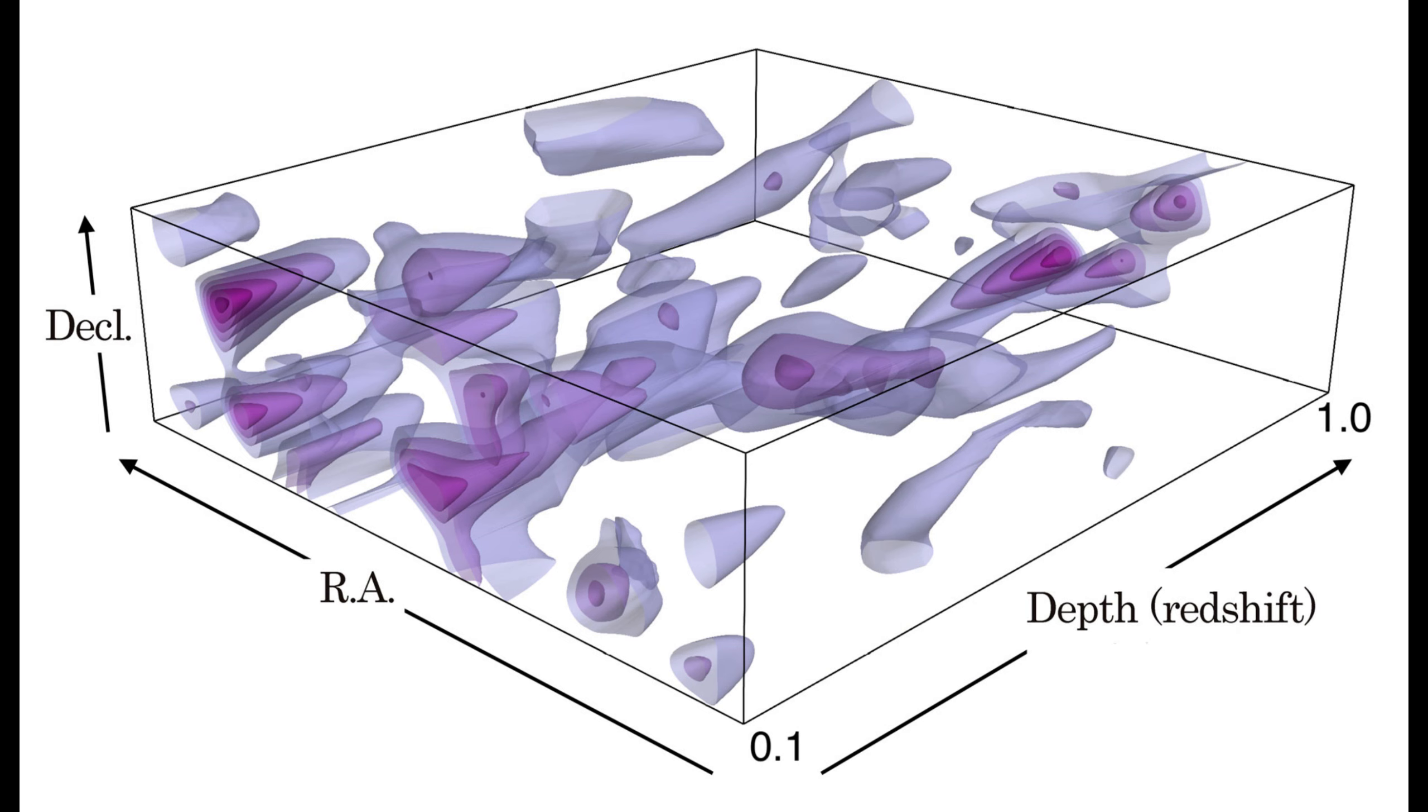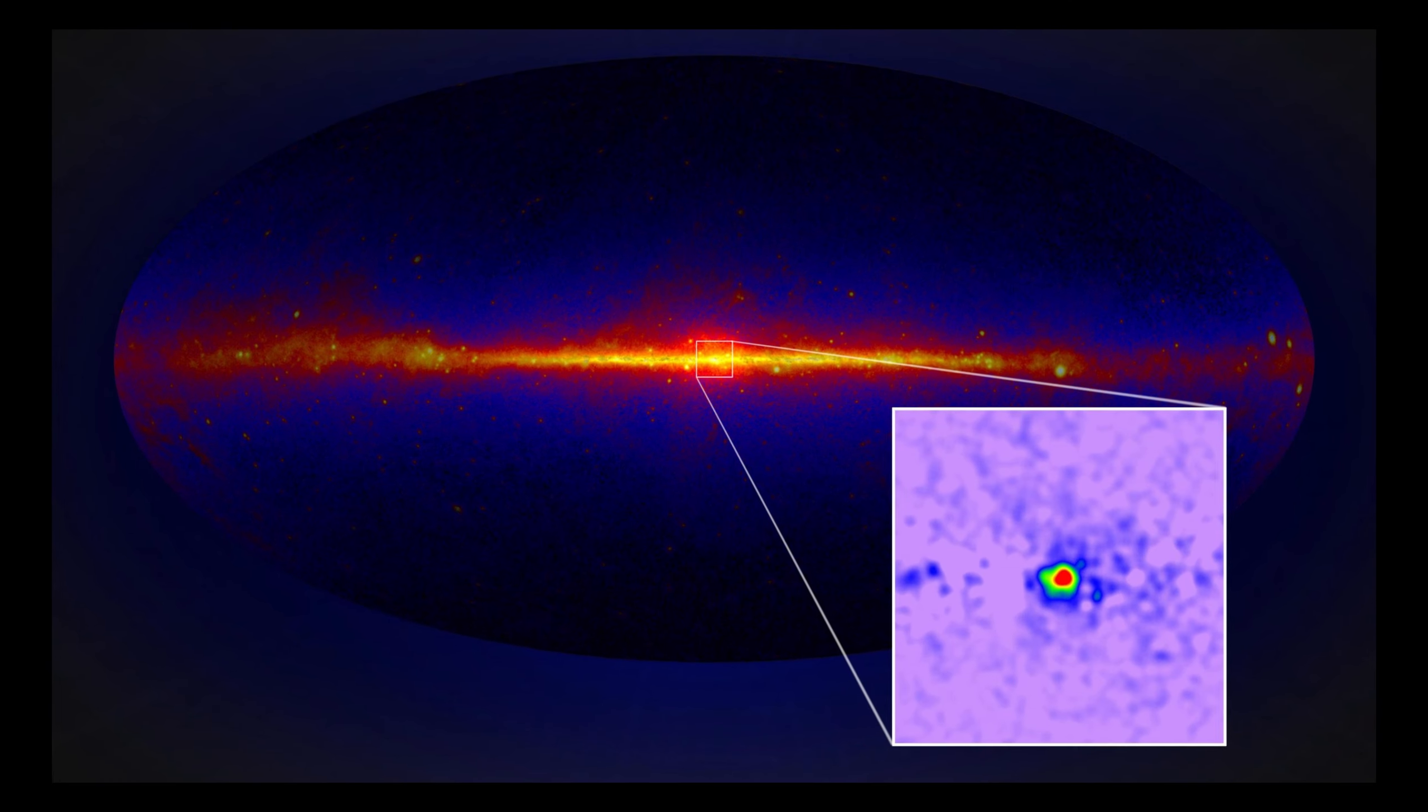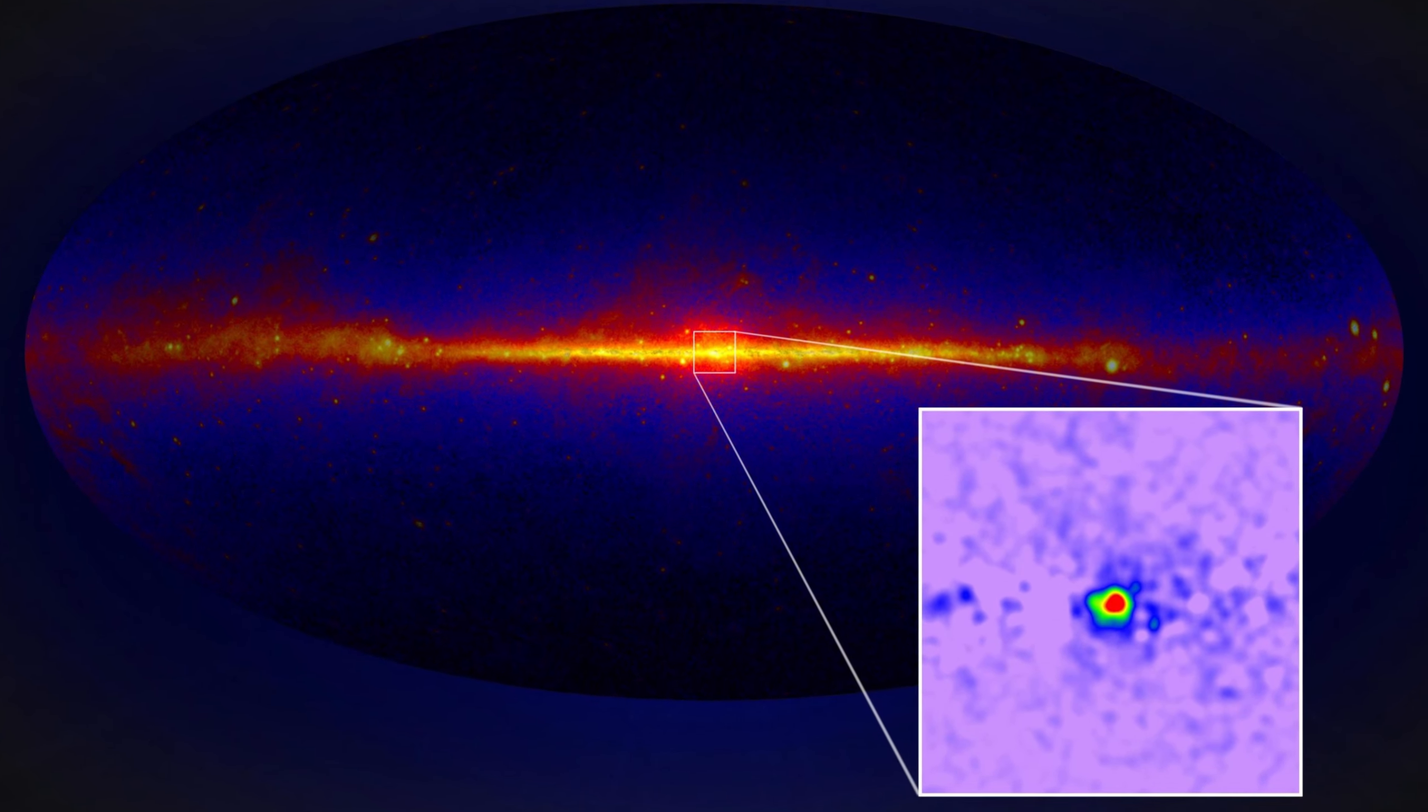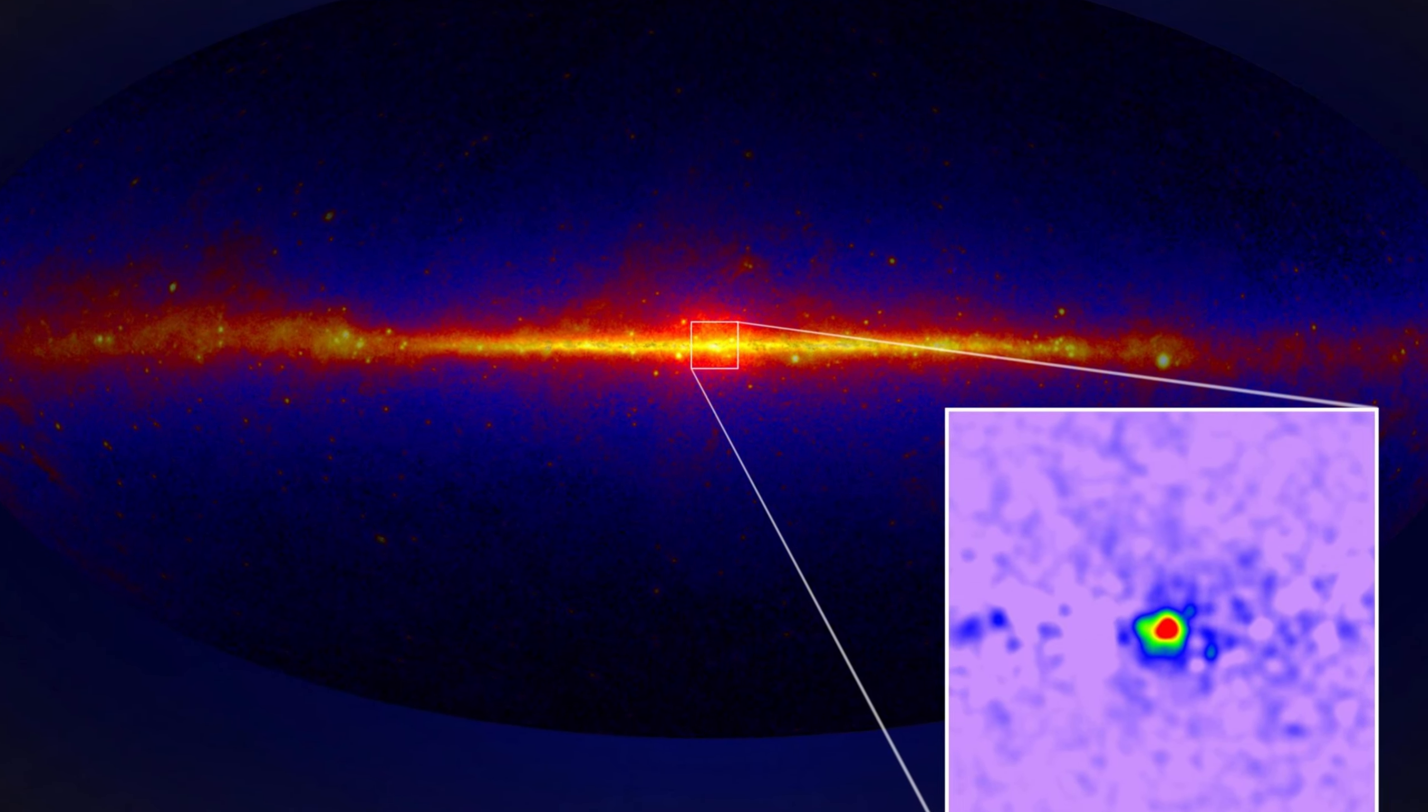The concentration of dark matter in space varies significantly. For example, in our galaxy, it is most concentrated closer to the center of the Milky Way.